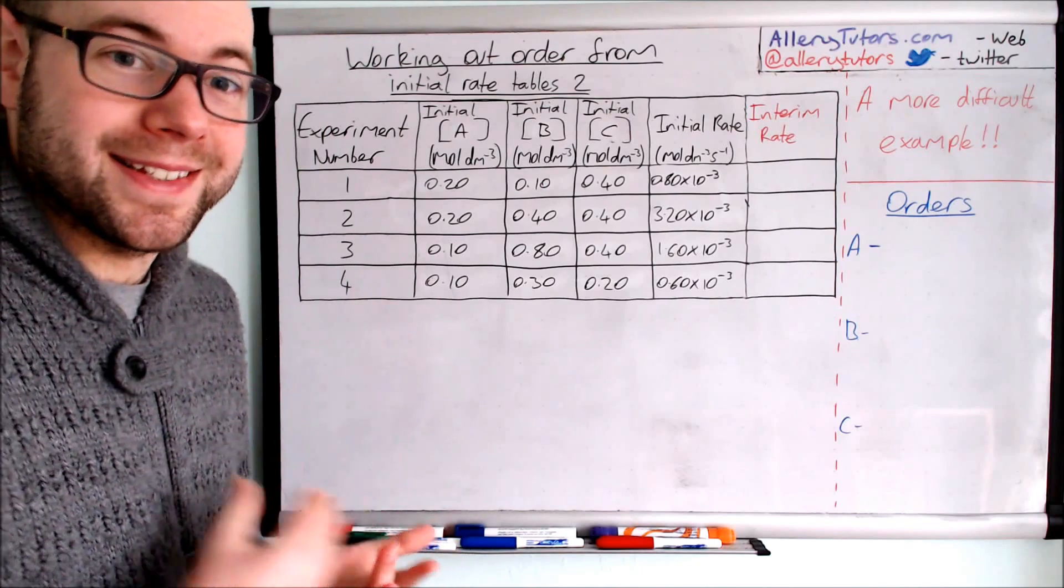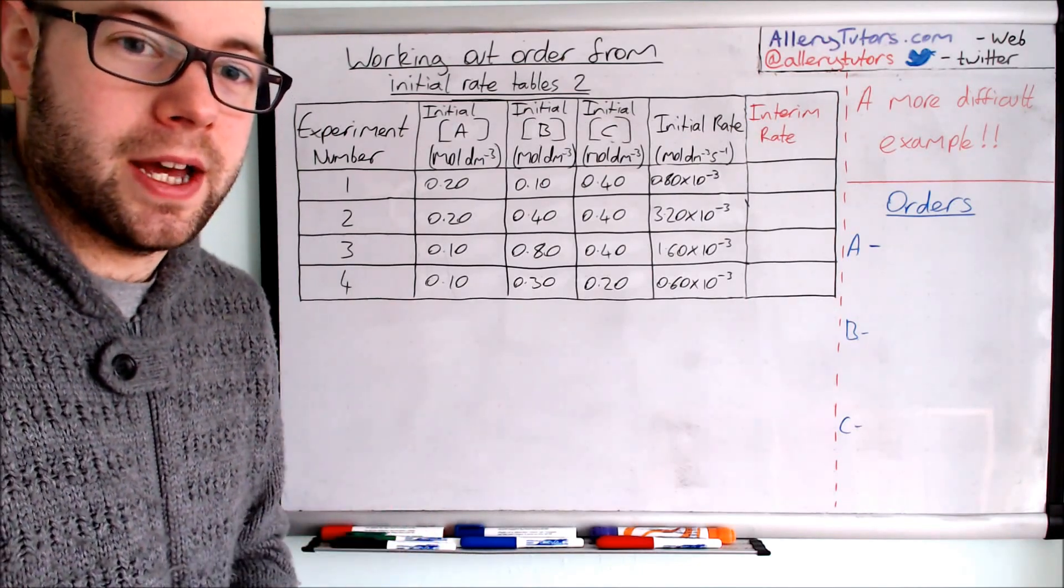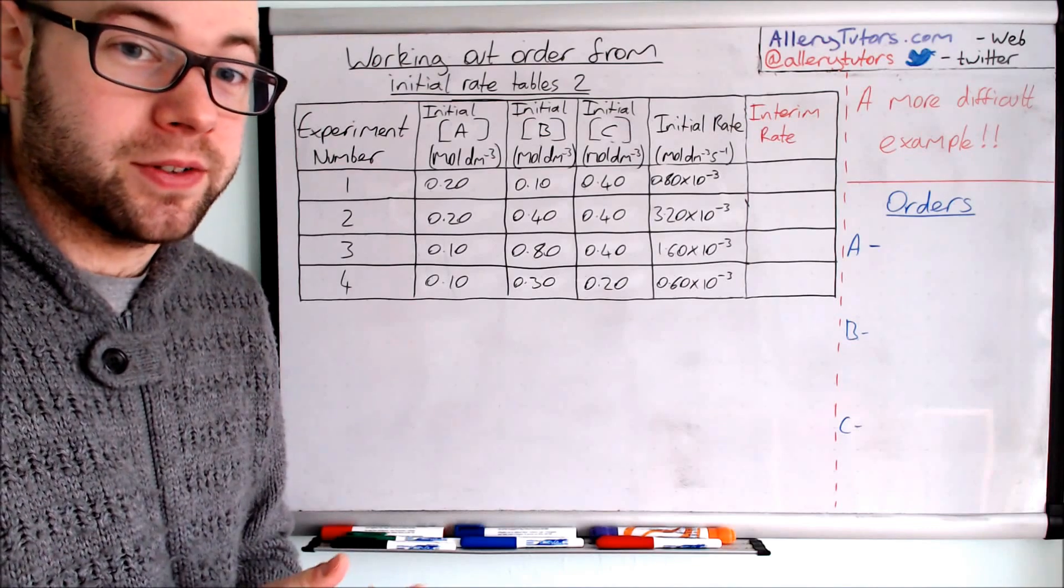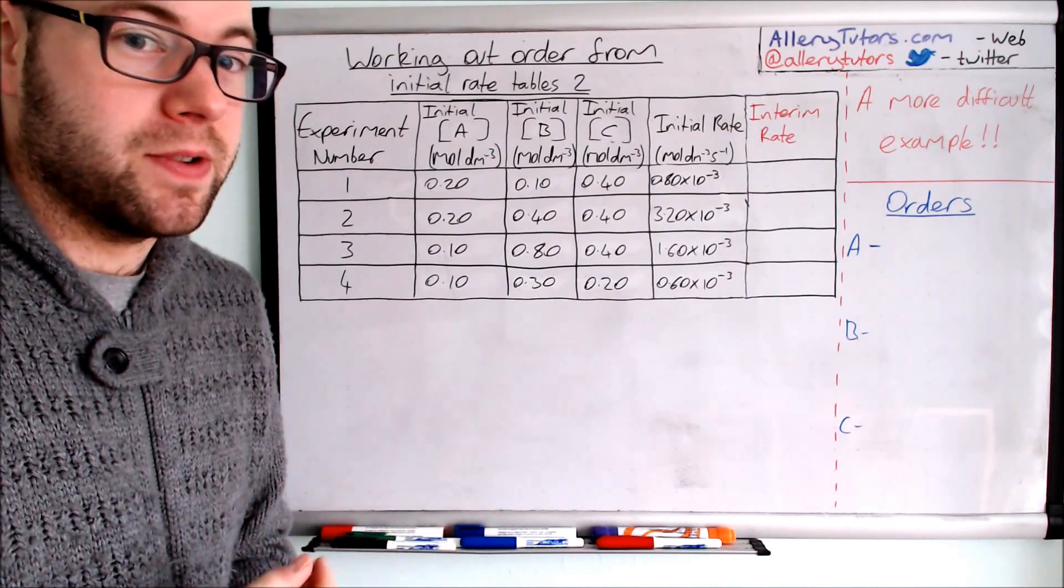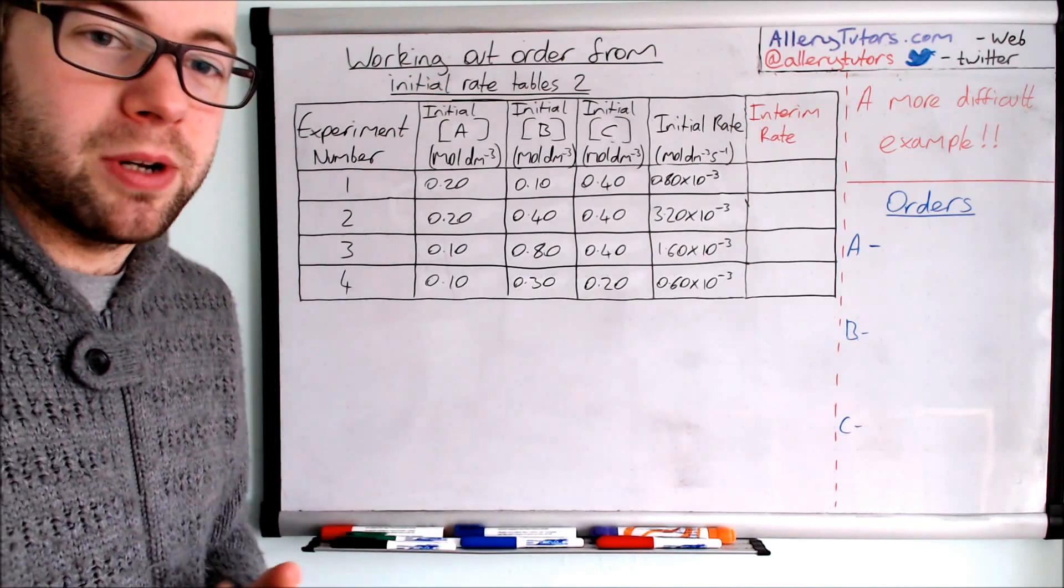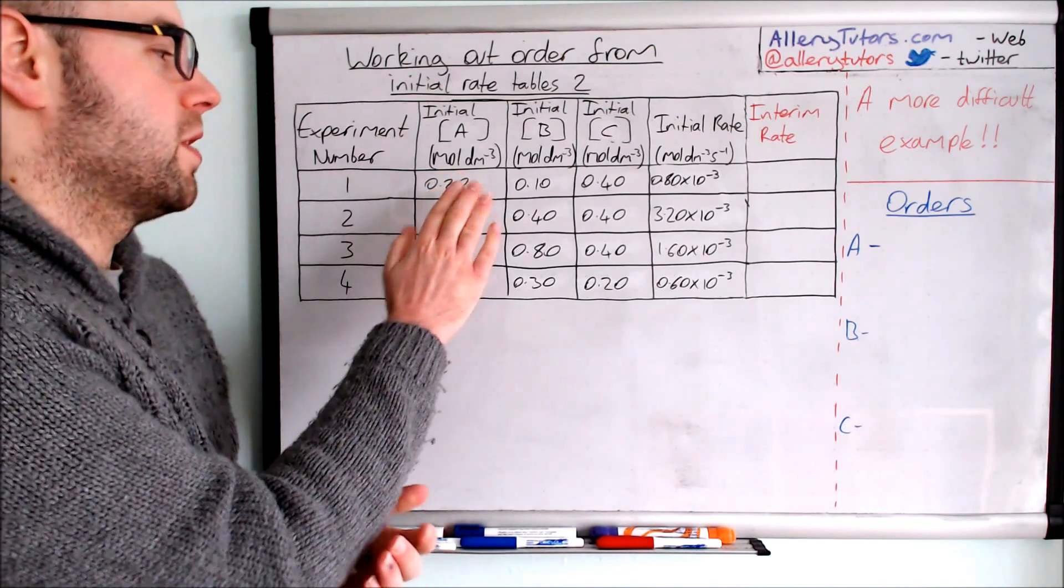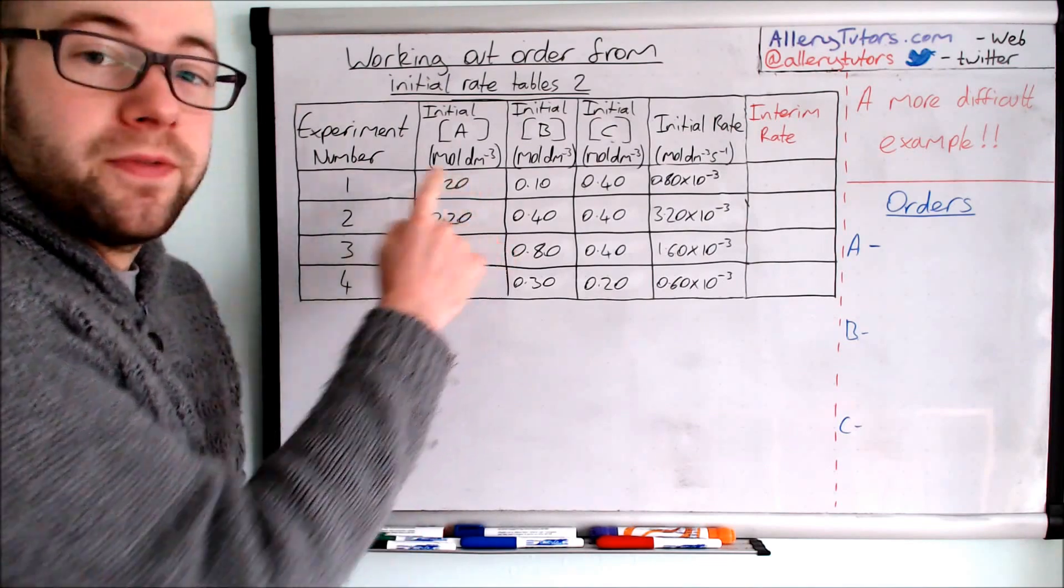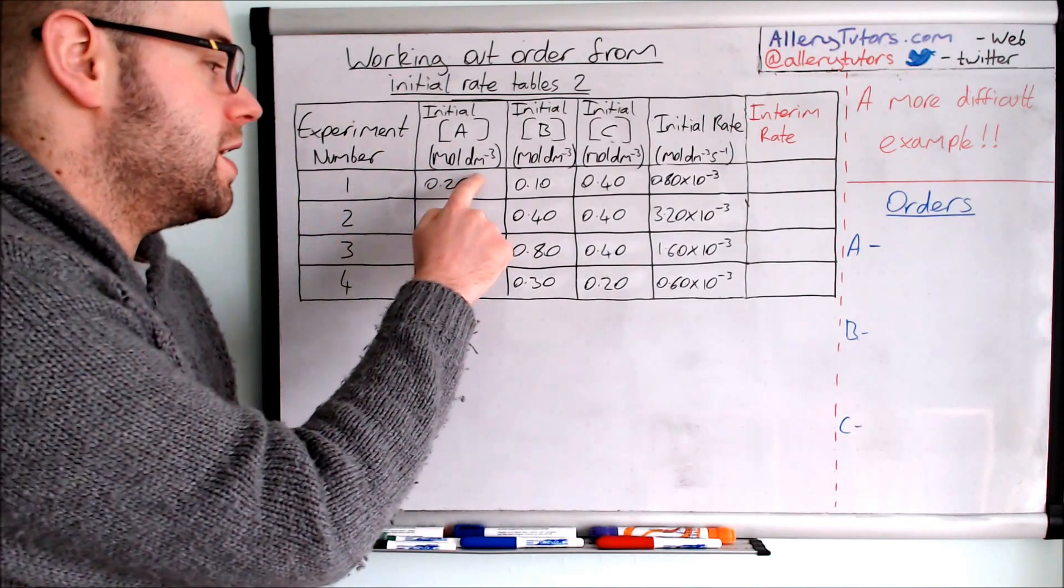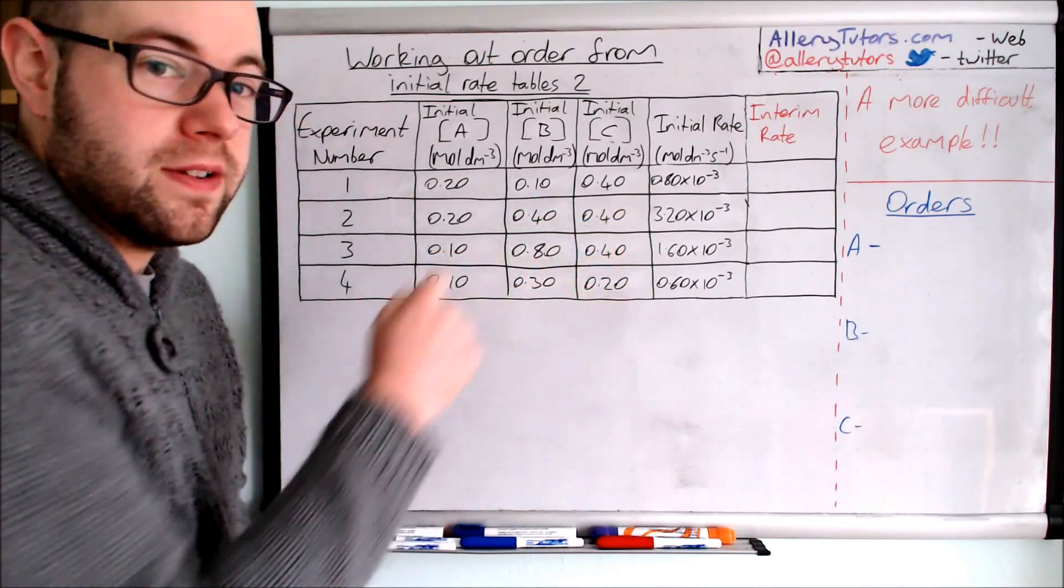Just before I move on to this, I do want to say that there is a much easier rate table example that I've done as well. If you're looking for that type of video and you're not quite ready to jump onto this really tough one, just click on the link below. We're going to look for areas where the concentration is changing for one reagent but not changing for others.